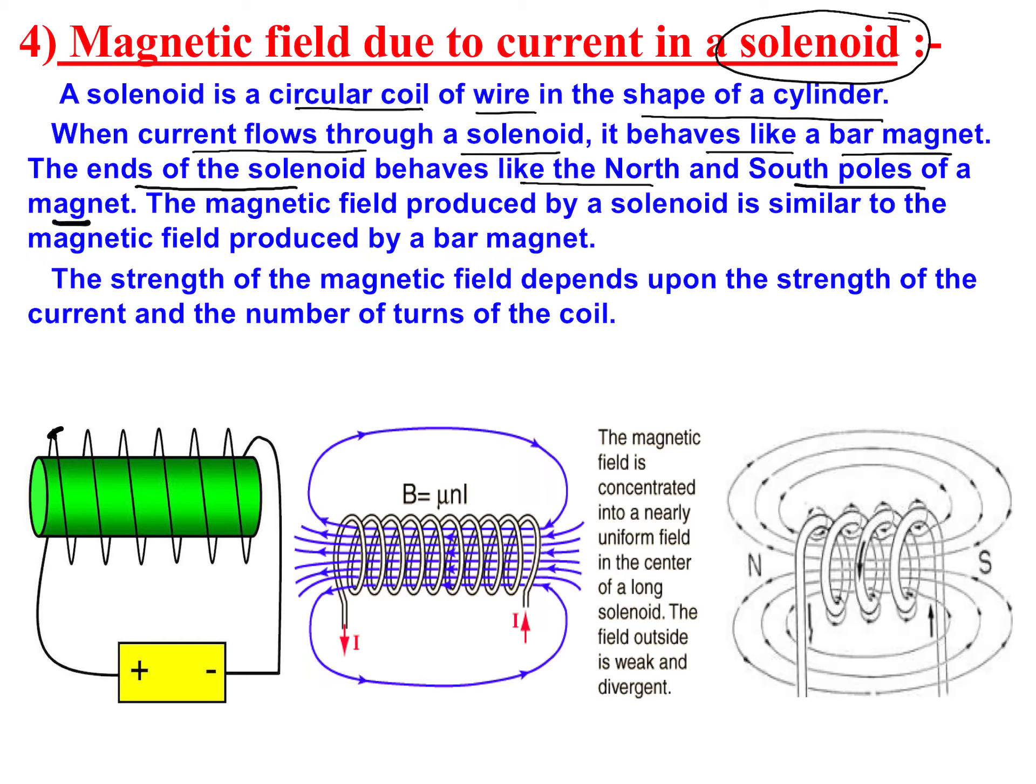The ends of the solenoid behave like the north and south poles of a magnet. We know that in a bar magnet we have north and south poles. Similarly, in a solenoid we will have north and south poles. We have to identify them.